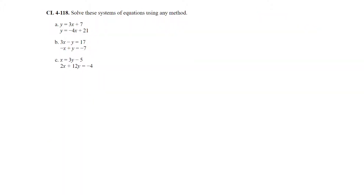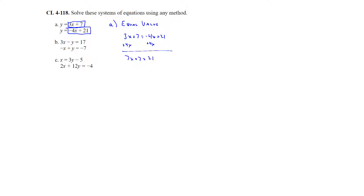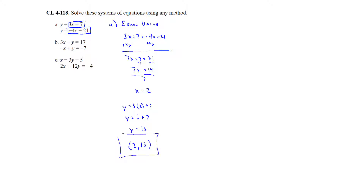On question 118, solve these systems of equations using any method. For part a, we're going to use the equal value method because we have two equations written as y equals. So we set 3x plus 7 equal to negative 4x plus 21. Adding 4x to both sides gives 7x plus 7 equals 21. Subtracting 7 gives 7x equals 14, and dividing by 7 gives x equals 2. Plugging back in, we get y equals 6 plus 7 equals 13. So x equals 2, y equals 13.